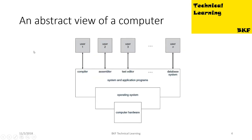Here's an abstract view of a computer: your computer hardware, your operating system, followed by system and application programs, and then the users. The users interact with system and application programs like compiler, assembler, text editor, or DBMS. These programs are controlled by the operating system, which also interacts with computer hardware. So basically an OS acts as an intermediary between your application and system programs and your computer hardware.